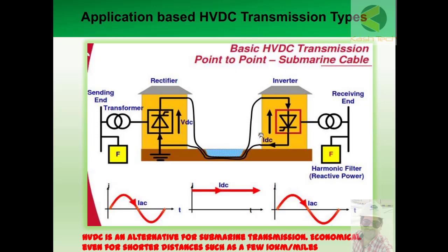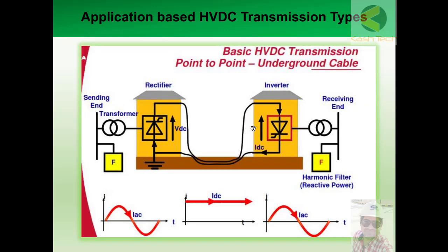HVDC is an alternative for submarine transmission and is economical even for short distances such as a few tens of kilometers or miles. Based on feasibility studies, for submarine cables you only need to lay one or two conductors for HVDC, which are smaller conductors. The cost becomes very high if you use AC transmission under the sea, even for shorter distances, making HVDC the cheaper option.